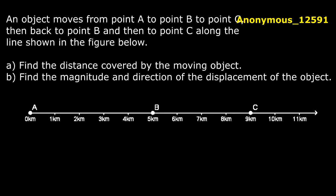We have to know that distance cannot be negative, so distance will be added. A to B is 5 kilometers as we can see, and B to C is 4 kilometers. So total distance will be 4 plus 5, that is 9 kilometers.